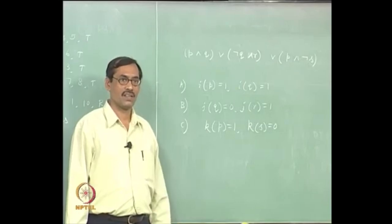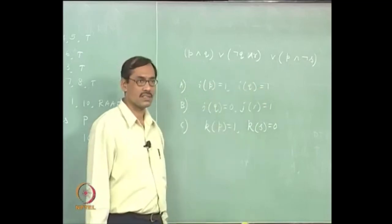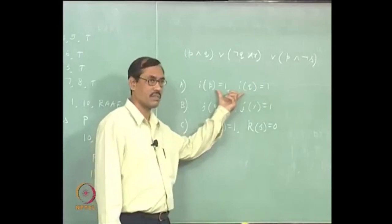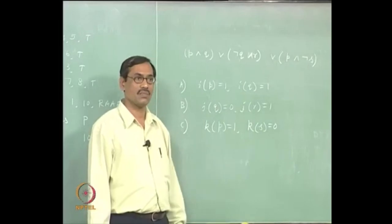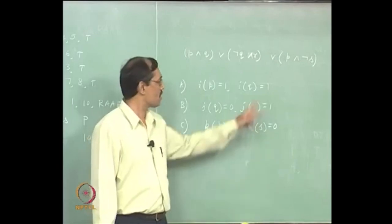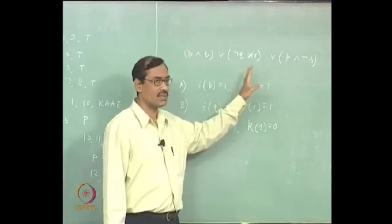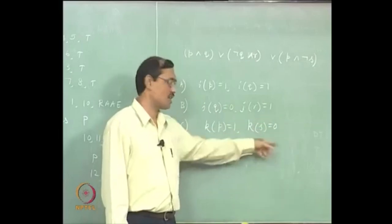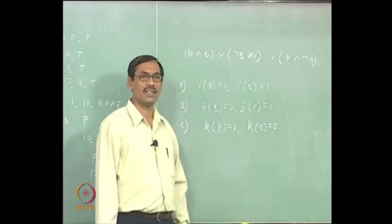Now this is an AND proposition - it is a conjunction of many. This can be one when all of them are one. Now we have three possibilities. One possibility says P must be one and Q must be one. In that case the proposition becomes one. Another possibility is when not-Q is one and R is one - so Q is 0 and R is 1. There is another possibility when P is one and not-S is one. These are the three possibilities we get looking at the proposition itself, and there is no other possibility when it becomes one.